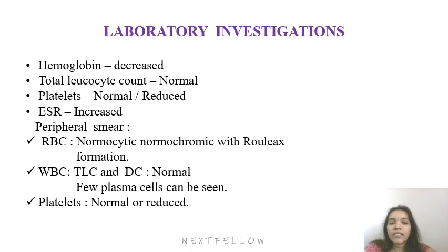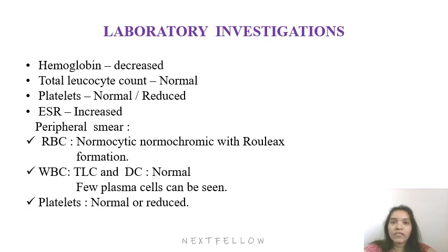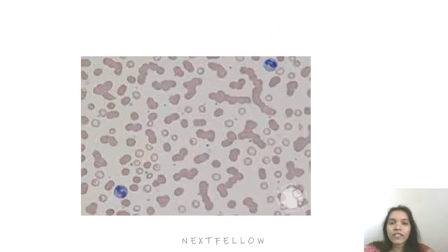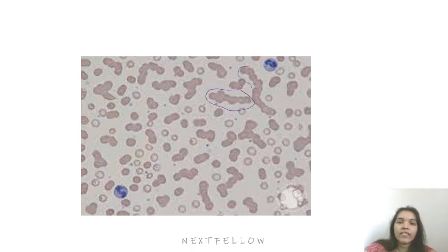WBC and differential counts can remain normal. Sometimes plasma cells can be appreciated within the peripheral smear. Platelets can be normal in the initial stages; with increasing plasma cell numbers, patients can also develop thrombocytopenia. This peripheral smear picture of multiple myeloma clearly shows rouleaux formation.